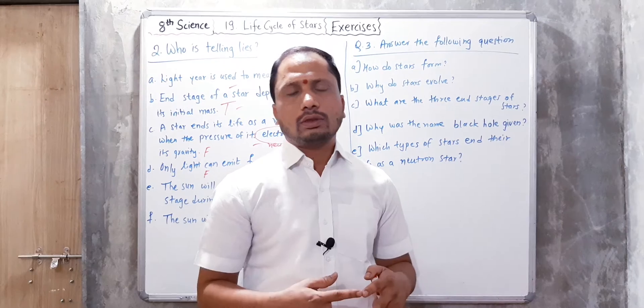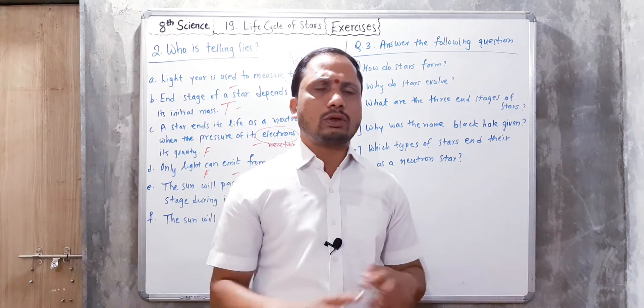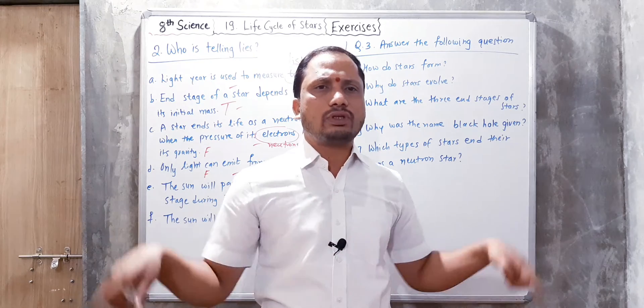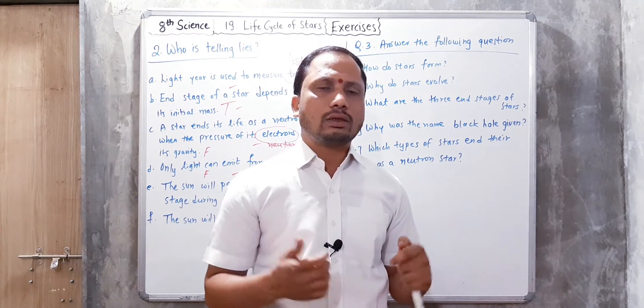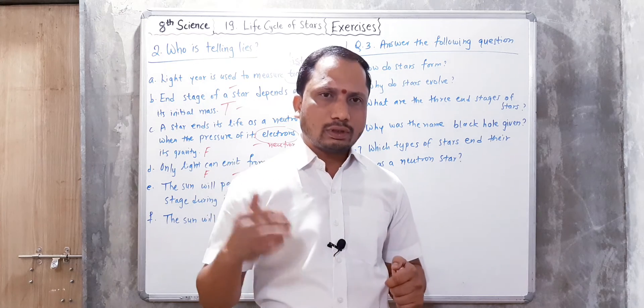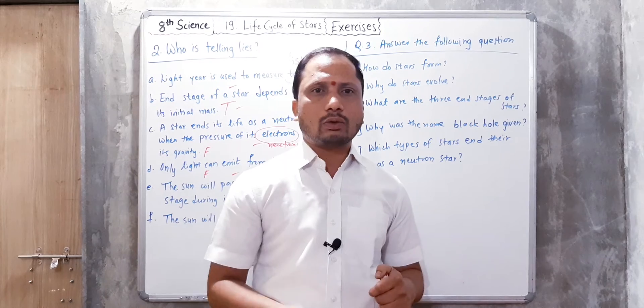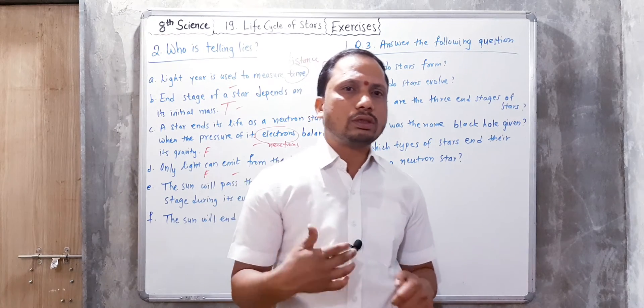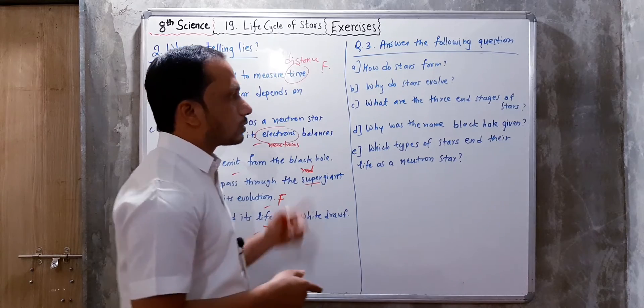Why was the name black hole given? In that condition the density and mass increases so much that all other planets or objects present around that star get attracted towards that black hole and finally they cannot come out from the black hole.